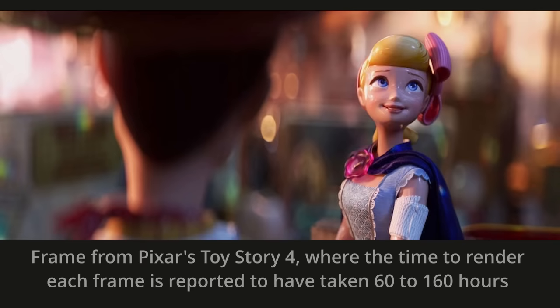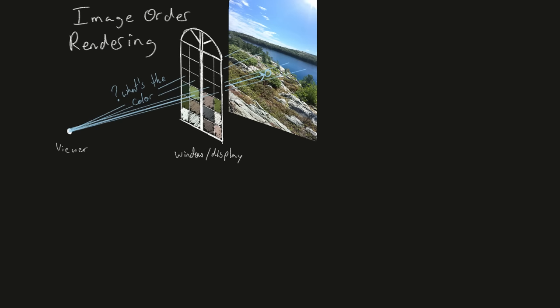A single frame in Toy Story 4 could take anywhere between 60 to 160 hours to render using CPU-based ray tracing. Ray tracing is known as image order rendering, since each pixel is first considered, and then on a per-pixel basis we find all the objects that could influence it.